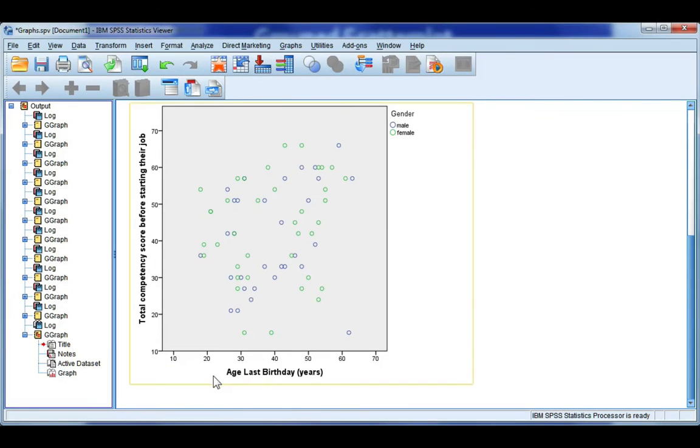So now I can see the relationship between age and competency for males, which are the blue bubbles, and females, which are the green bubbles. We can see that looks like there's a similar trend because all the blue and the green bubbles are mixed up together.